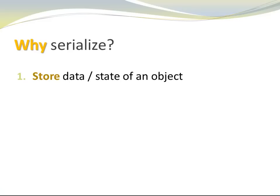Why do we serialize? There are a couple of good reasons. One of them is to store data or the state of an object. Objects are created on the heap, and the heap is for temporary storage. When my application terminates, the object is no longer accessible. If I want to keep the state of my object, I can serialize them and persist them in a file or a database, and access them long after my application has terminated.